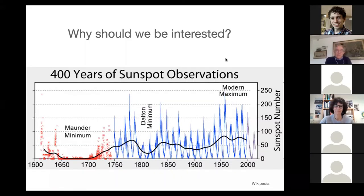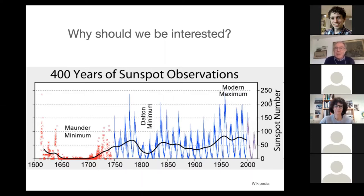Why should we be interested in sunspots? Observations are rather spotty in the 17th century, then continuous since about 1750, when we started numbering sunspot cycles. The sunspot number is simply the number of sunspots visible on any particular day. There is a very big minimum in the 17th century, a smaller minimum in the beginning of the 19th century, and a maximum in the second half of the 20th century. Clearly, the sun goes through a much longer cycle of activity than just the 22-year cycle.